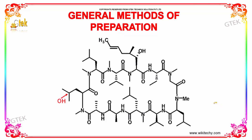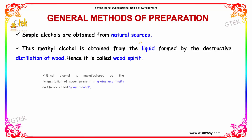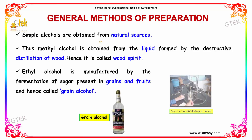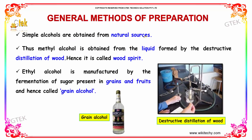General methods of preparation of hydroxy compounds. Simple alcohols are obtained from natural sources. Methyl alcohol is obtained from the liquid formed by the destructive distillation of wood, hence it is called wood spirit. Ethyl alcohol is manufactured by the fermentation of sugar present in grains and fruits, and is called grain alcohol.